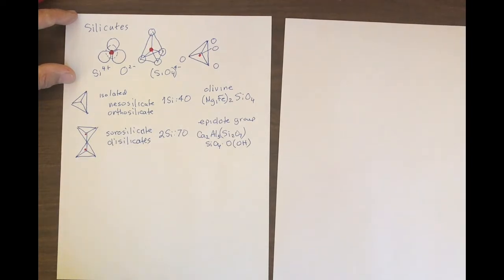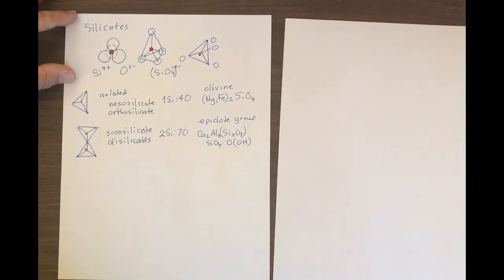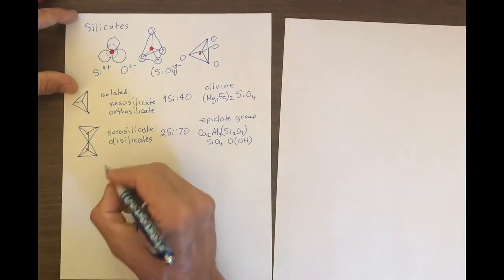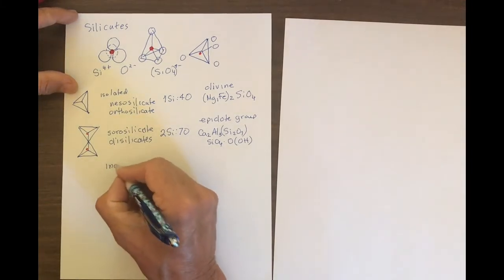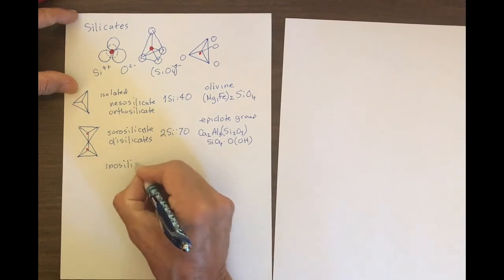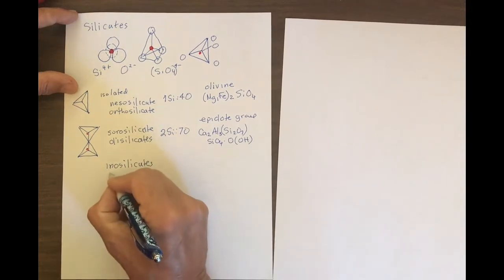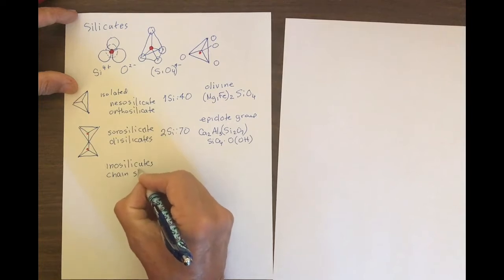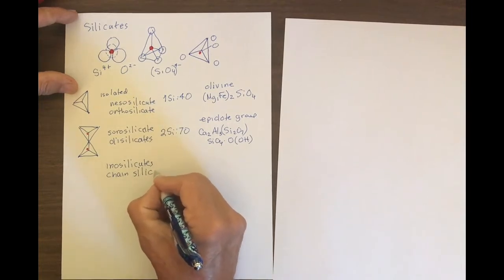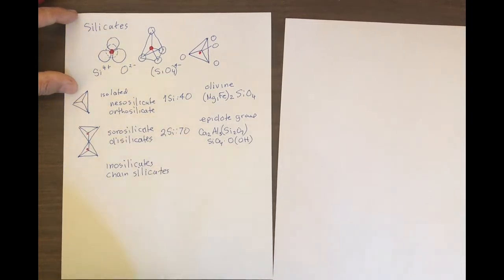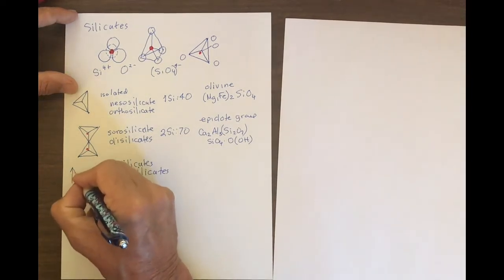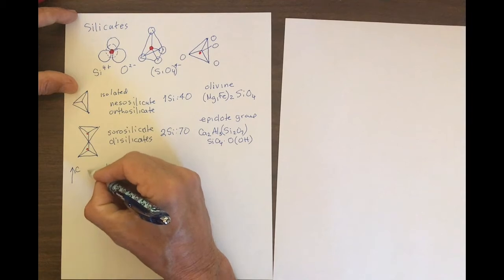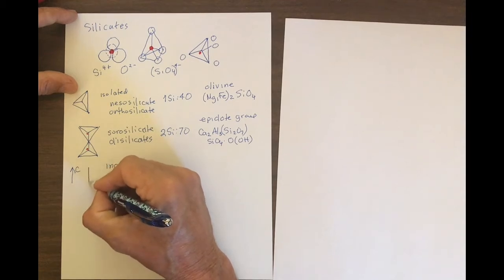Now we're going to go on to slightly more complicated structures. The next group of silicates are called chain silicates or inosilicates, and they are as you'd expect them to be — they're elongated in one direction. That's normally the c-axis of the mineral.